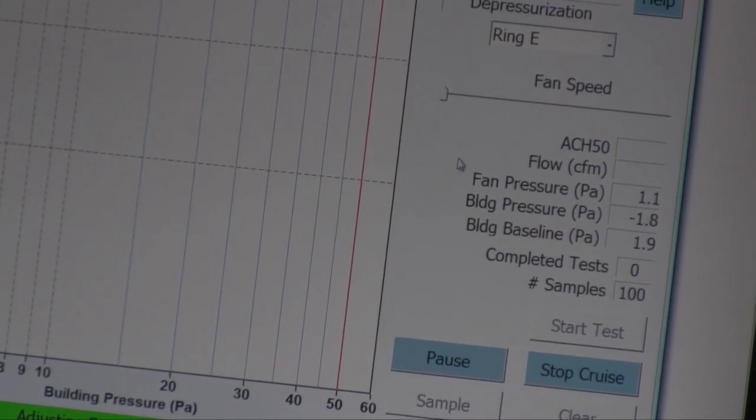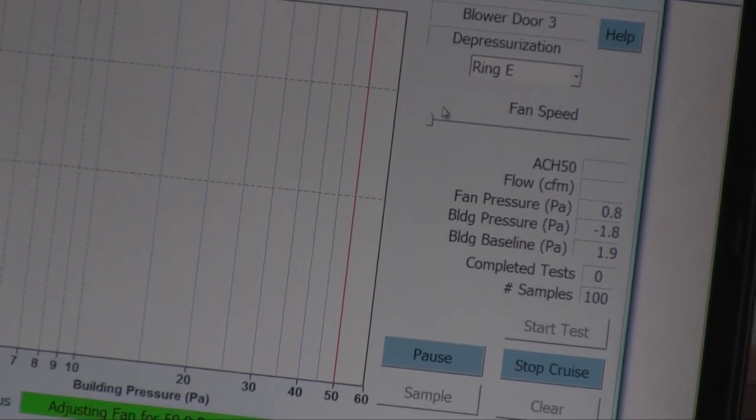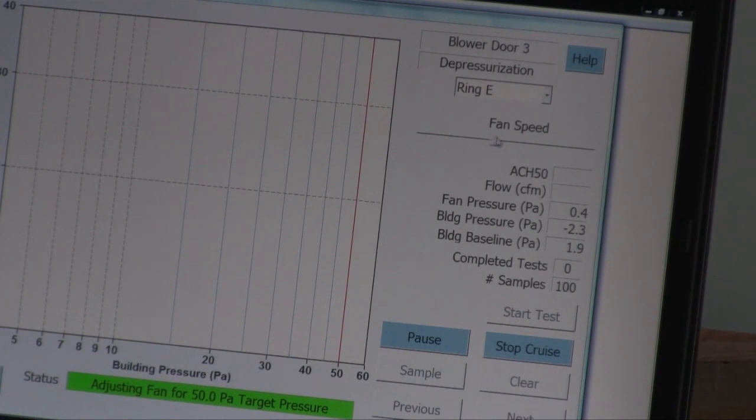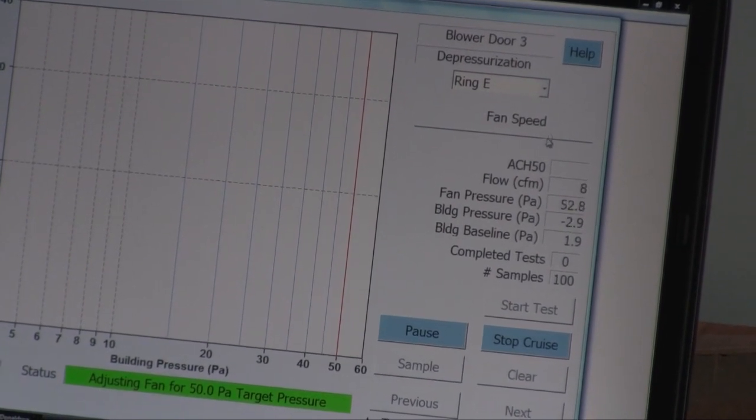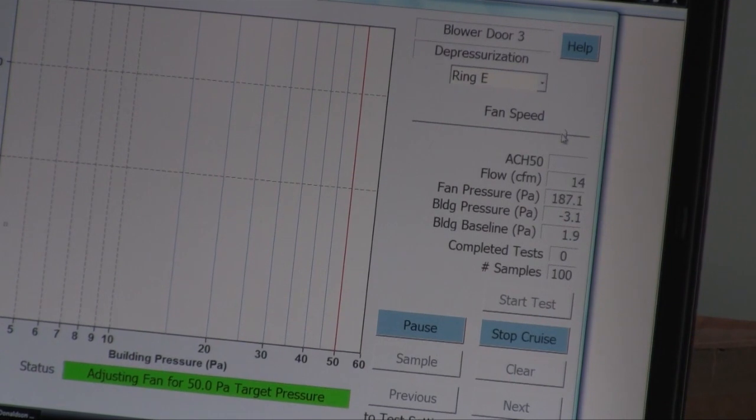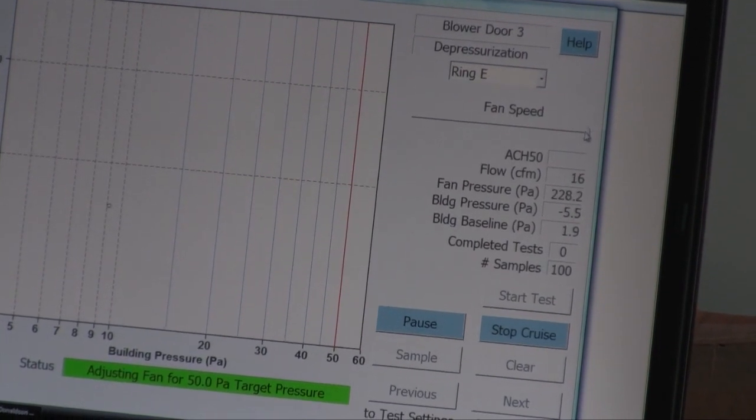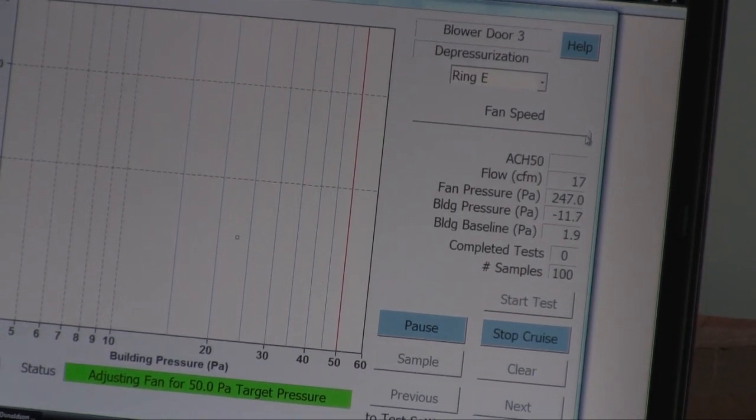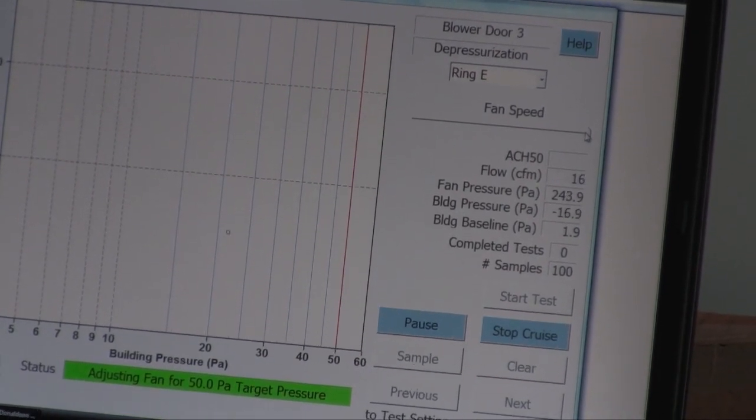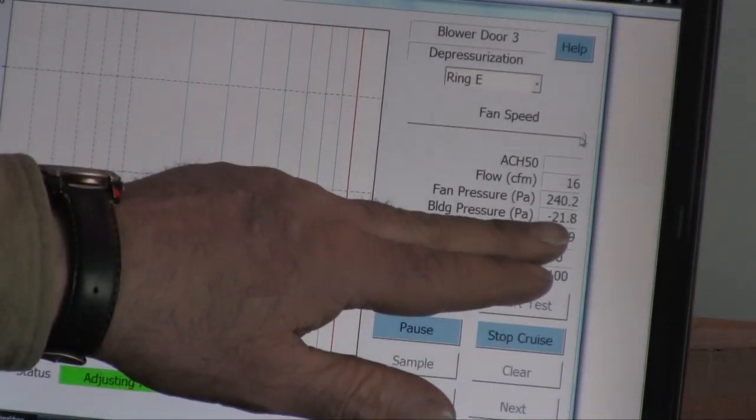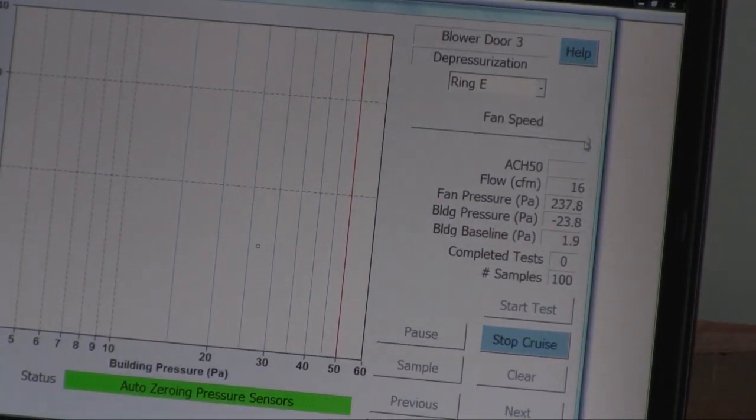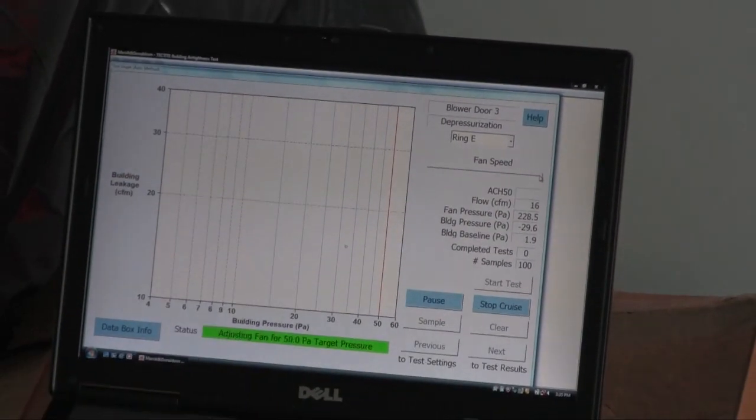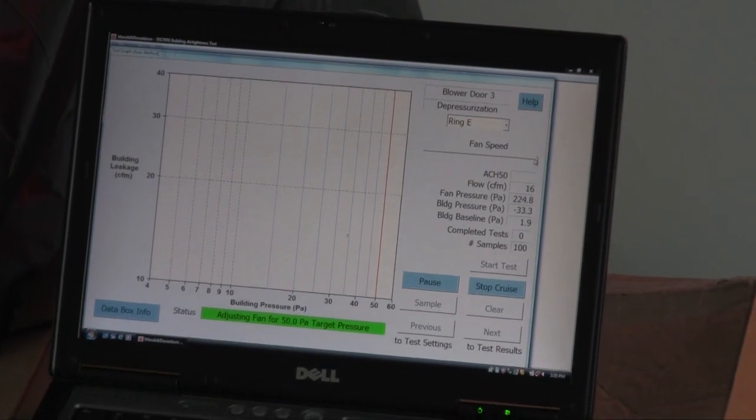Take the tape back off. We have ring E identified here with the new parameters for ring F. Proceed with the cruise. Now I'm going to override the cruise initially because with that very small hole it takes a long time to get the building down to pressure. Looking for 50 pascals, negative 50 pascals building pressure. And as it gets closer to that, I'm going to bring it back and let it take over.